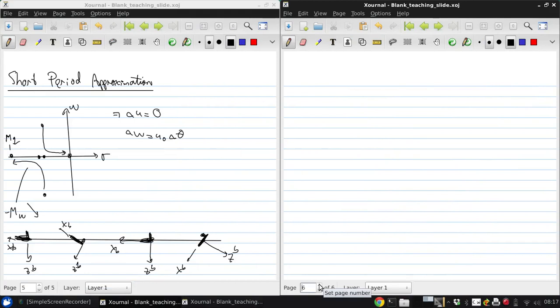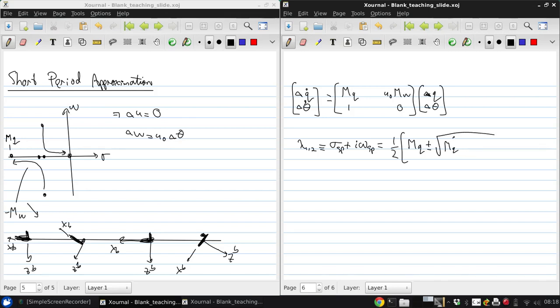Now as a result we now have a different 2x2 system for the dynamics. So now the motions of interest are delta Q and delta theta, which are governed by MQ, U naught MW, one zero times delta Q, theta. And this Jacobian matrix has the eigenvalue pair lambda one two is sigma short period plus I times omega short period, which is given by one half from the quadratic formula MQ plus or minus the square root of MQ squared plus four U naught MW.